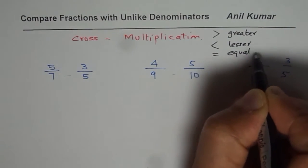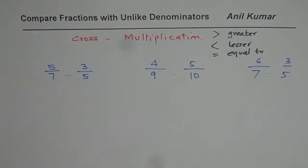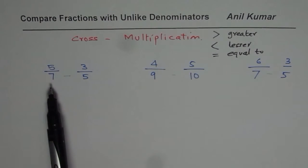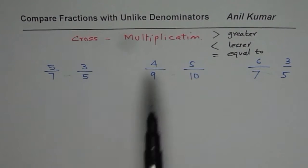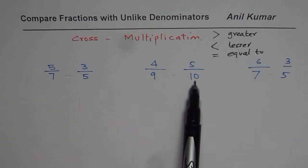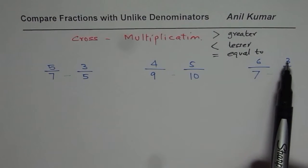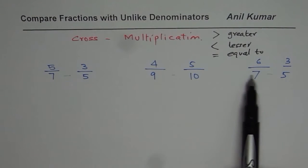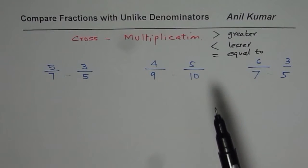So we have 5 over 7, 3 over 5 to compare, 4 over 9, 5 over 10 to compare, 6 over 7, 3 over 5 to compare. All have different denominators. Now how do you compare in such cases?